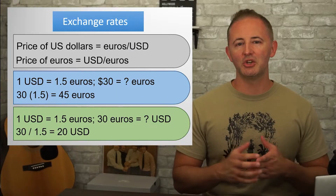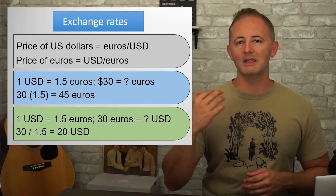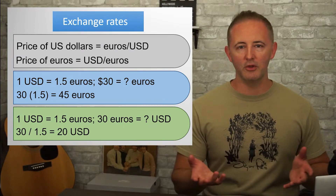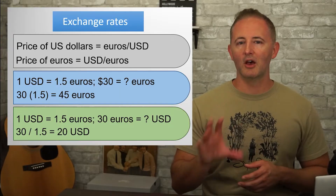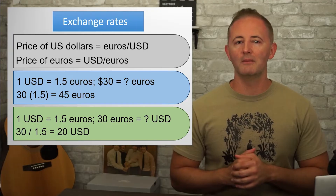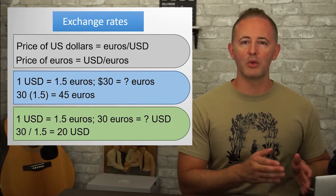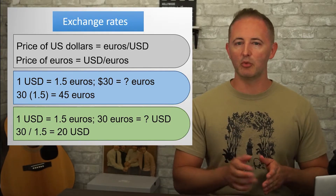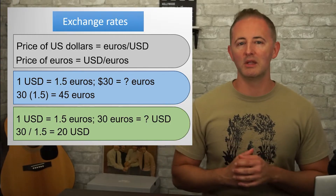The exchange rate is showing us the relative value of one currency to another. In the example I've been using, which currency is more valuable? Pause the video if you need a minute to think about it. Well, if you said the dollar is more valuable, then you're exactly right. Why? Because when we trade $1, we receive more than 1 euro in return. Or conversely, when we trade 1 euro, we receive less than $1 in return.